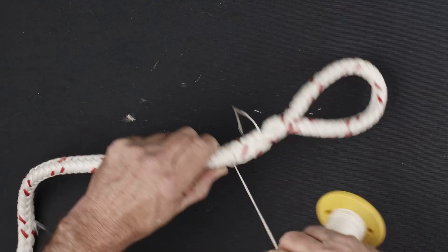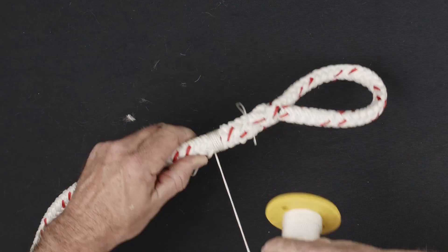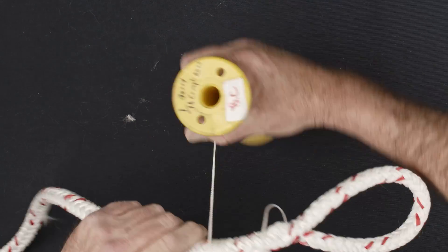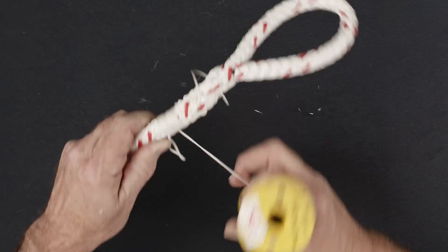Tightly wrap the whipping twine around the circumference of the rope, working away from the tail of the twine. The wrap should lay flat against the rope with no twist or lumps. Continue wrapping the rope until the whipping is the same length as the diameter of the rope.